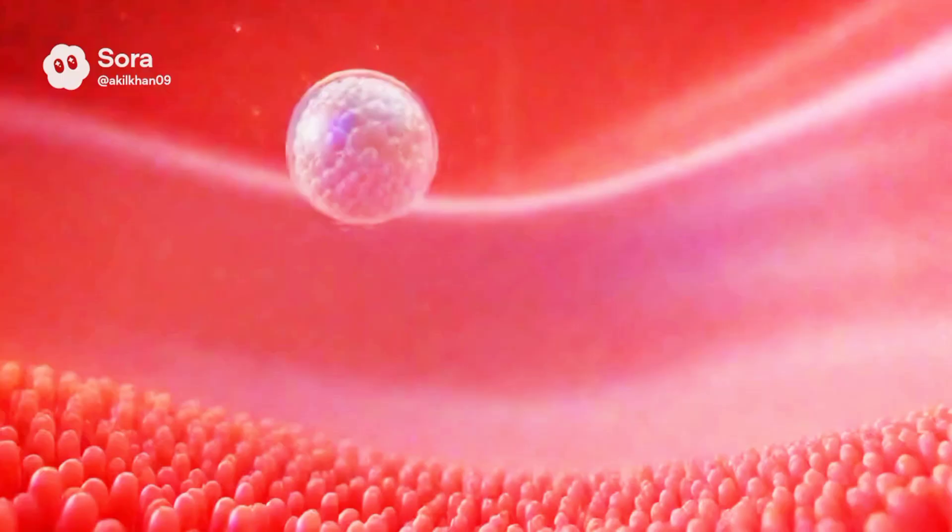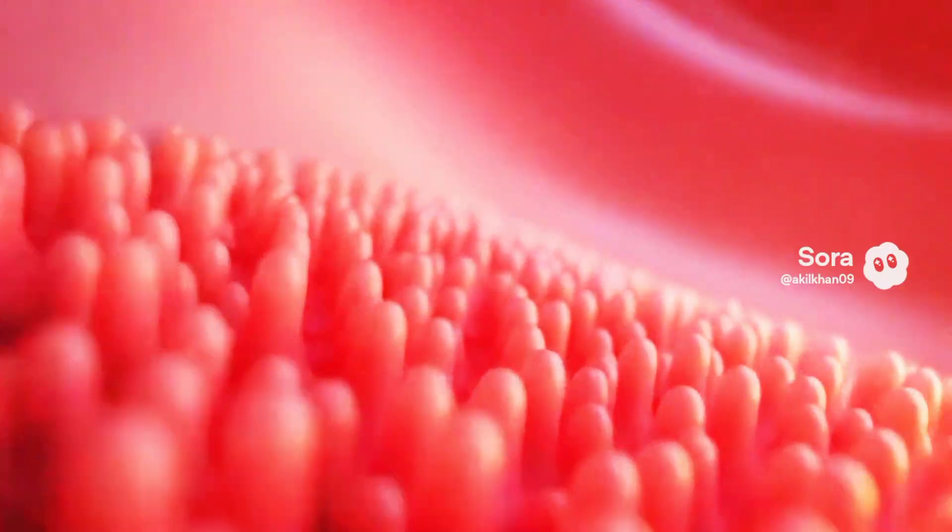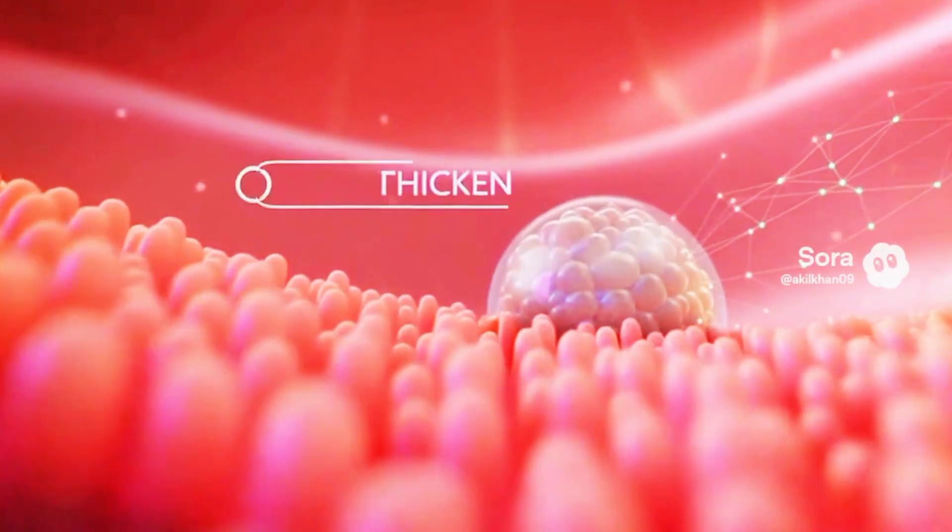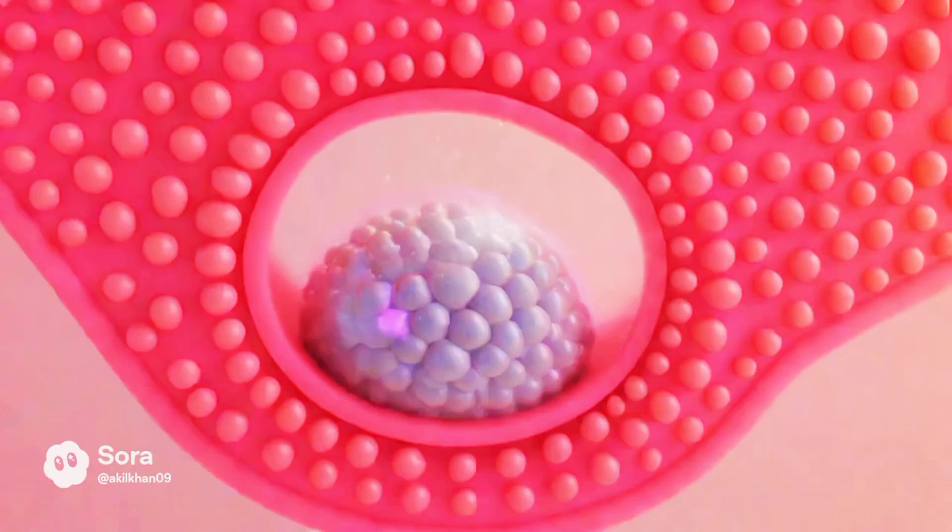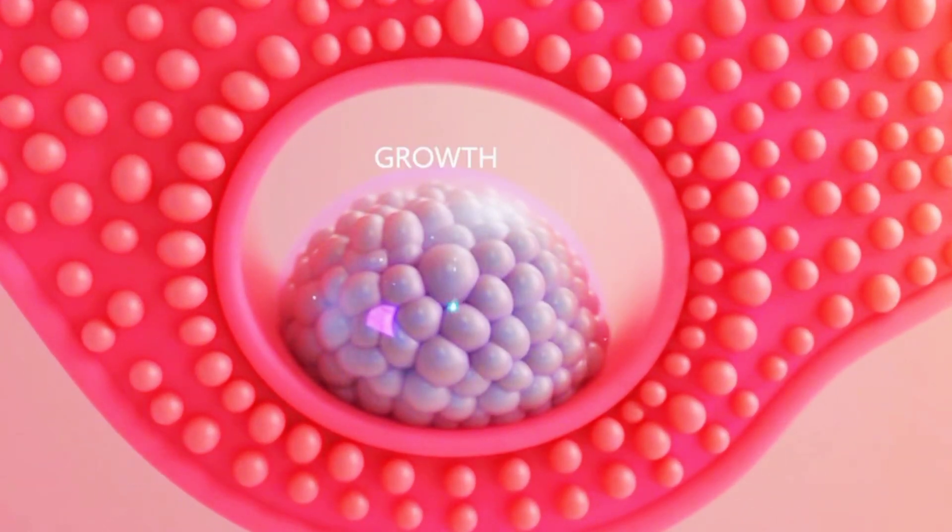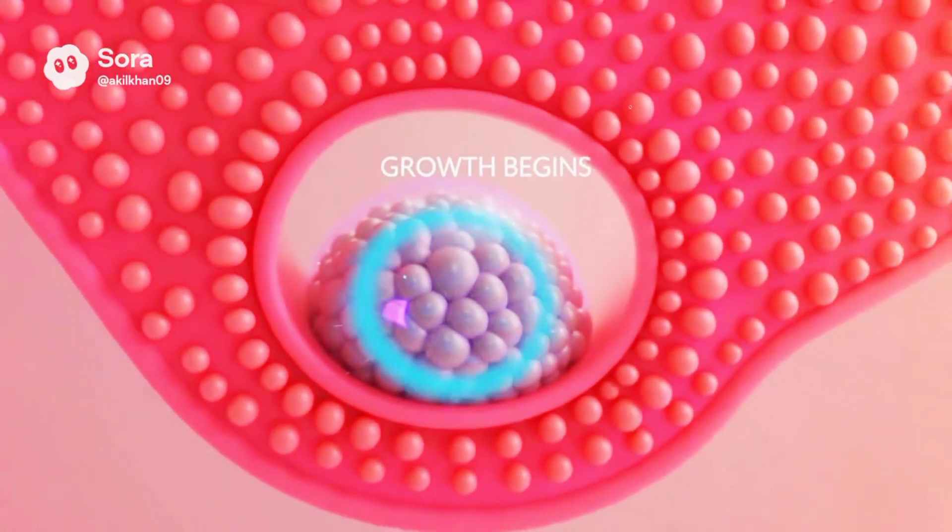Estrogen and progesterone surge through the bloodstream, carrying signals on a molecular level. Their message? Build. They thicken the endometrium, weaving vessels and storing nutrients, turning this soft lining into a plush, life-sustaining bed.